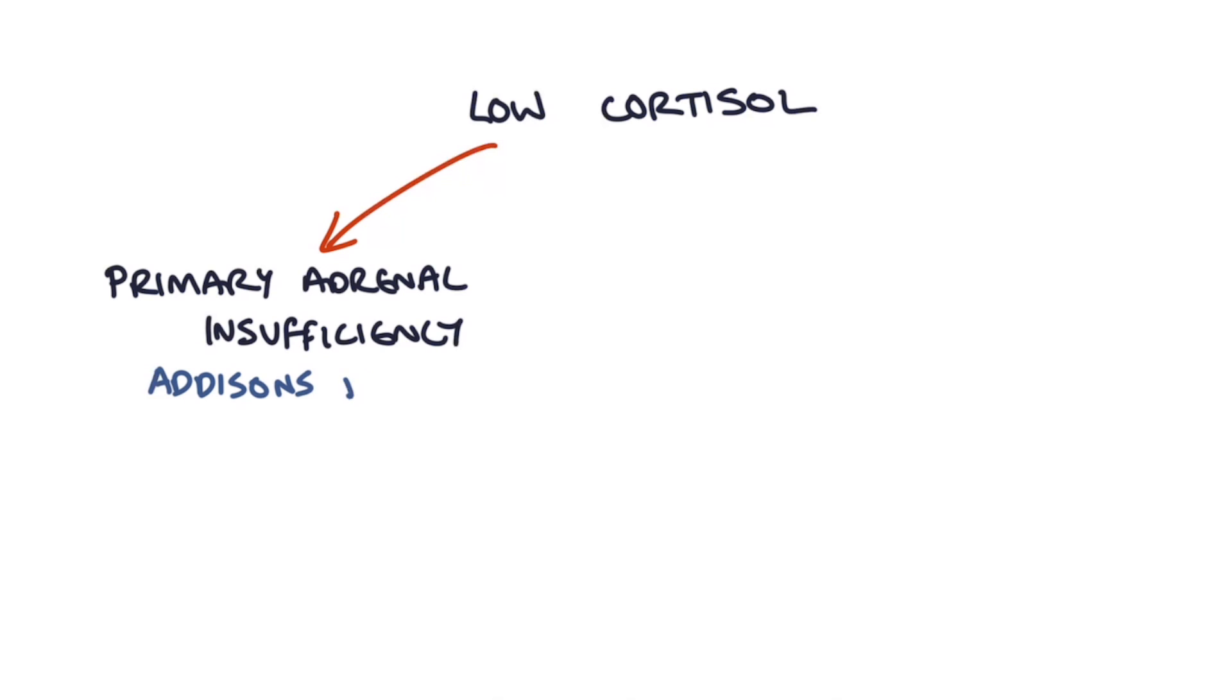There are two causes of low blood cortisol. The first is primary adrenal insufficiency or Addison's disease, and this refers to when the adrenal gland itself is inadequately producing cortisol, usually in response to some sort of damage.